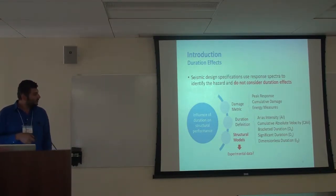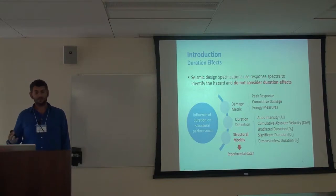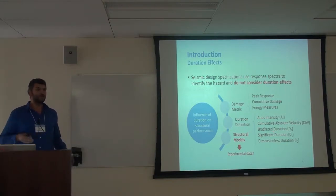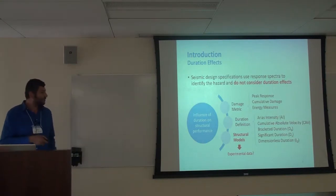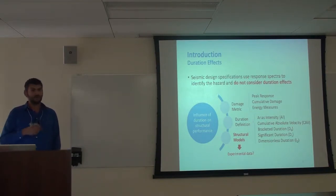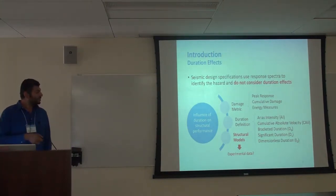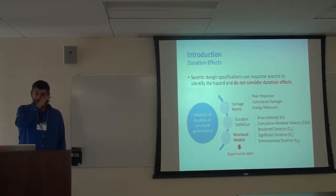To study the influence of duration, we need a damage metric — peak response, accumulated damage, or similar — and we need a definition for duration. There is a lot of research on how to define significant duration, starting from Arias intensity going from 5% to 75% or to 95%. We also need a high-fidelity structural model, and this is where the experimental part comes into play. A lot of analytical work has been completed already, and there is now a consensus that duration has an effect — you might see premature failure due to the duration effect. But are we confident in these models?